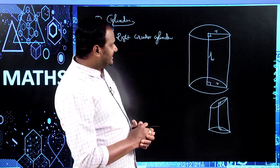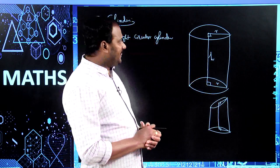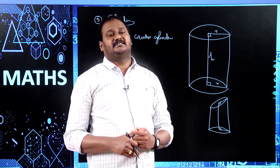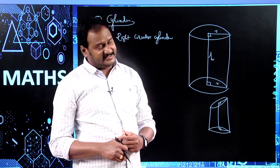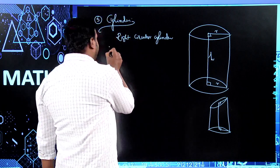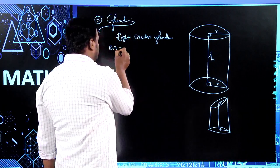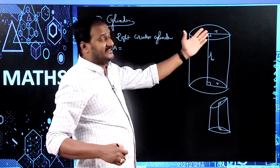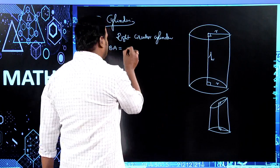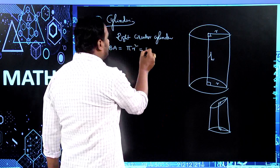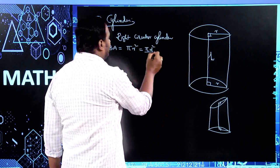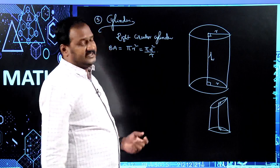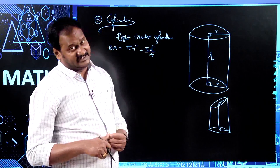For a right circular cylinder, both the bases are two parallel and congruent circles. Therefore, the base area of a cylinder is the area of a circle. When radius equals small r, the formula is πr², or πd²/4 when the diameter is given. That is the base area of a cylinder.